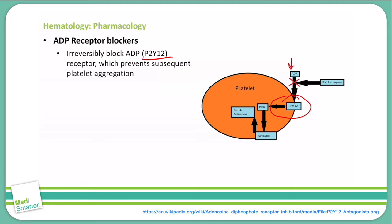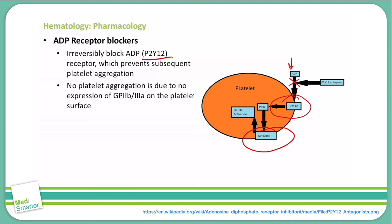When we see that decrease of cyclic AMP, it's going to reduce the phosphorylation of a vasodilator-stimulated phosphoprotein, which will cause an activation of glycoprotein 2B and 3A receptors. Therefore, no platelet aggregation occurs due to this expression of the GP2B3A receptor on the surface of the platelets.